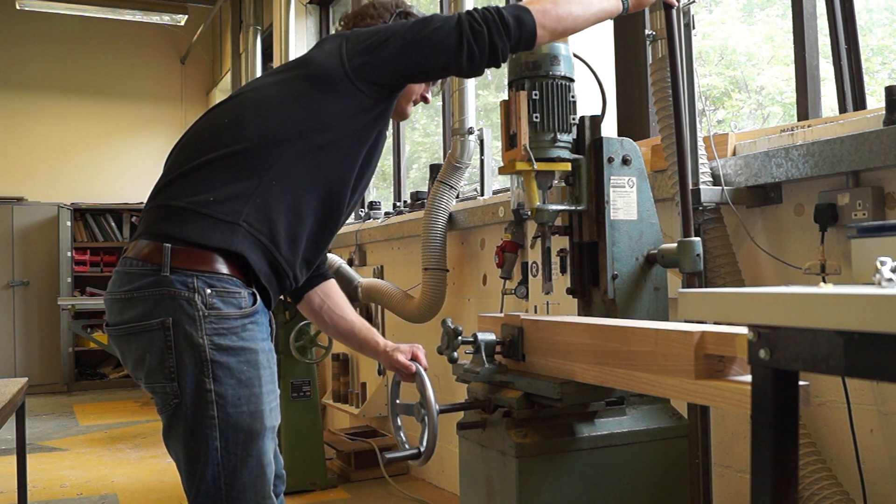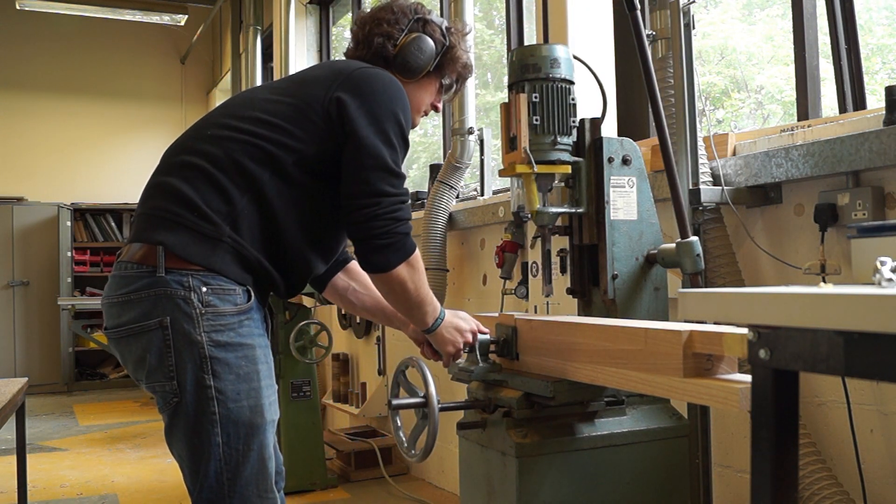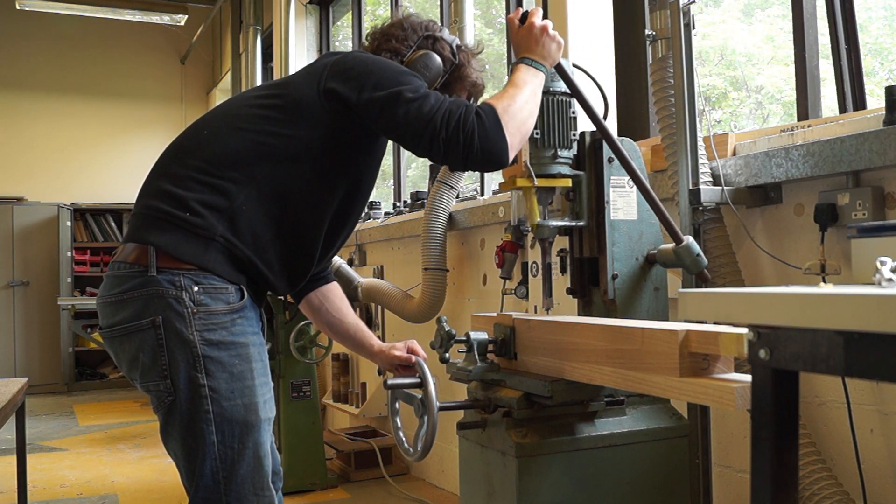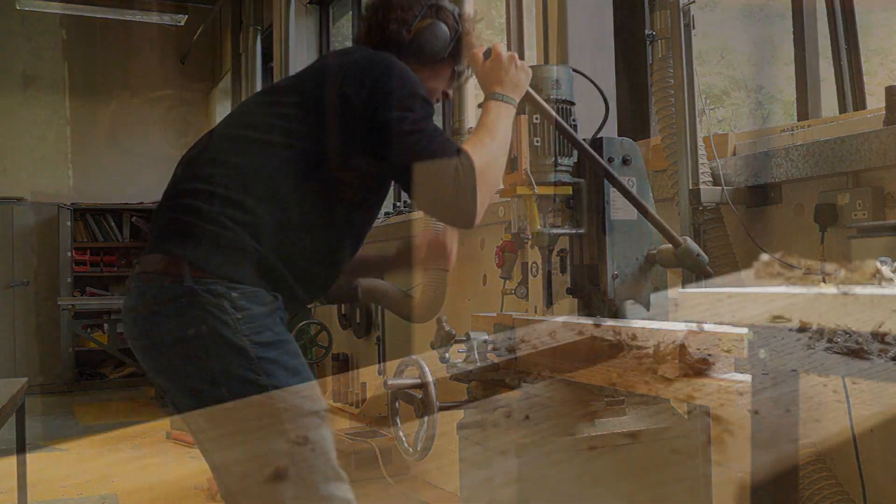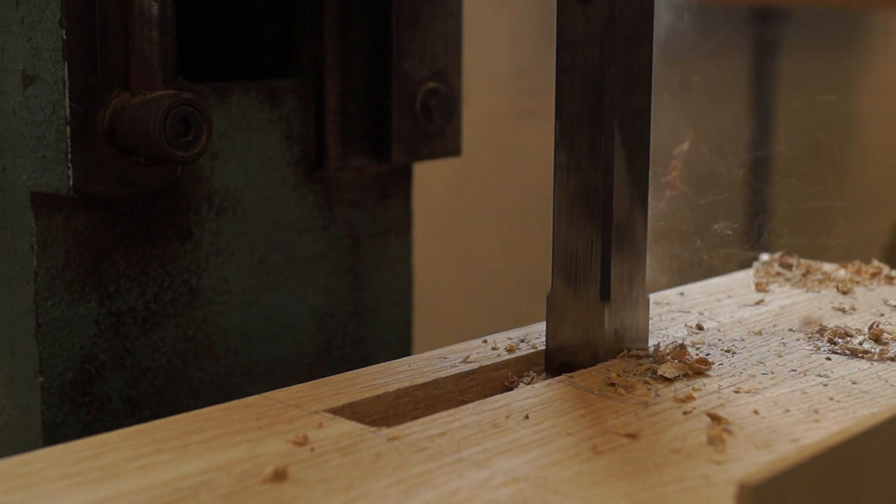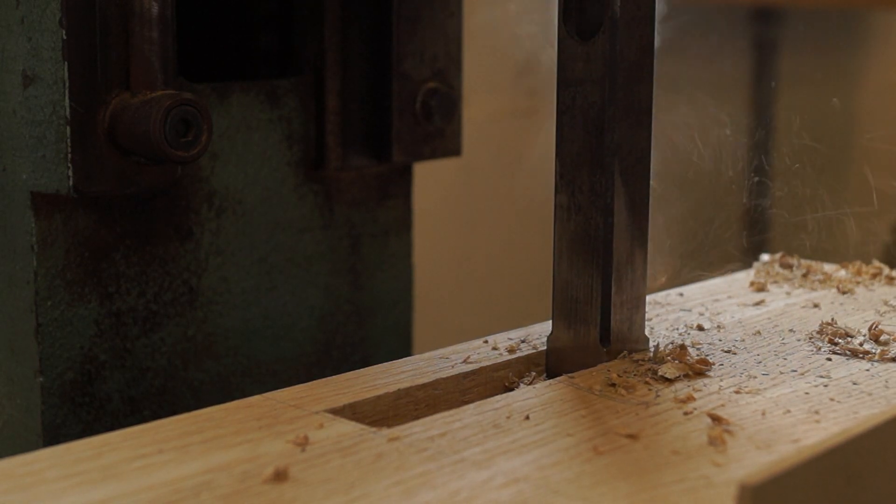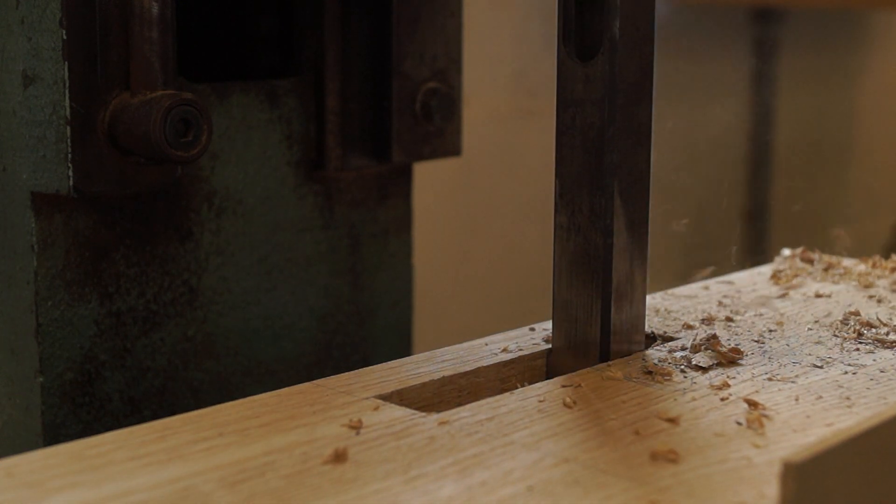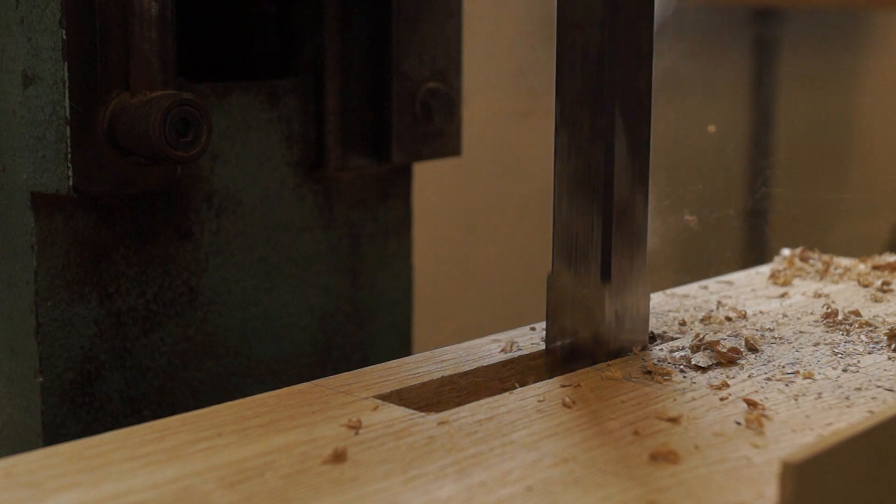This was the hardest part of the entire project: getting this three-quarter inch mortising bit to cut into ash. Absolutely dreadful task and it was boiling that day. As you can see here, it starts smoking a little bit. The bit wasn't the sharpest thing in the world. And I know it's easy to say you should always work with a sharp bit. Your bit should definitely be blunt.